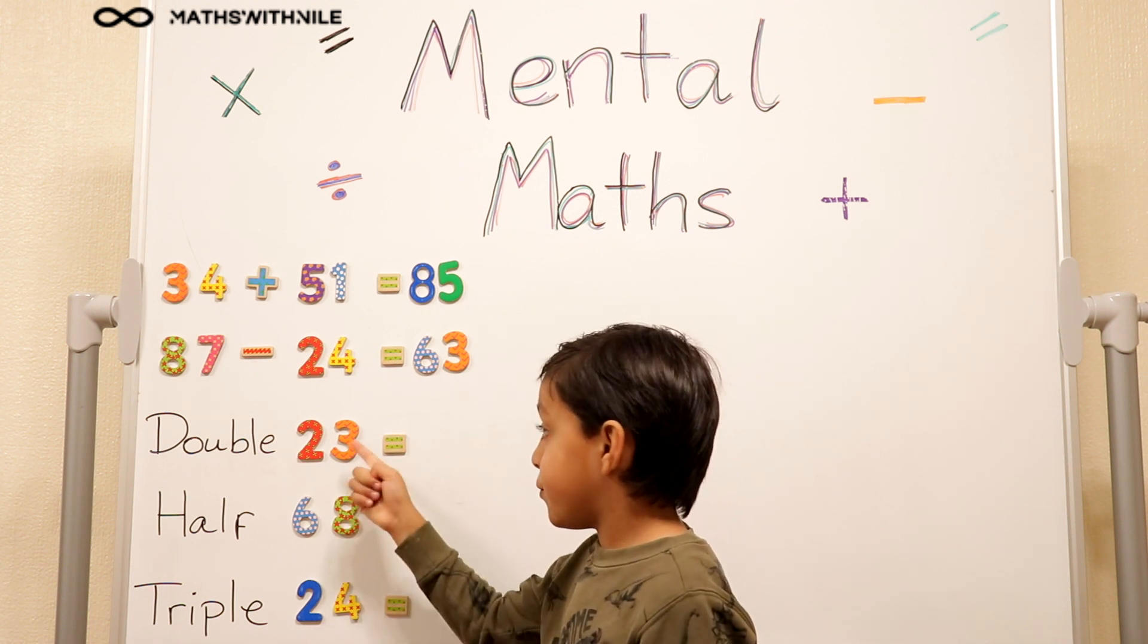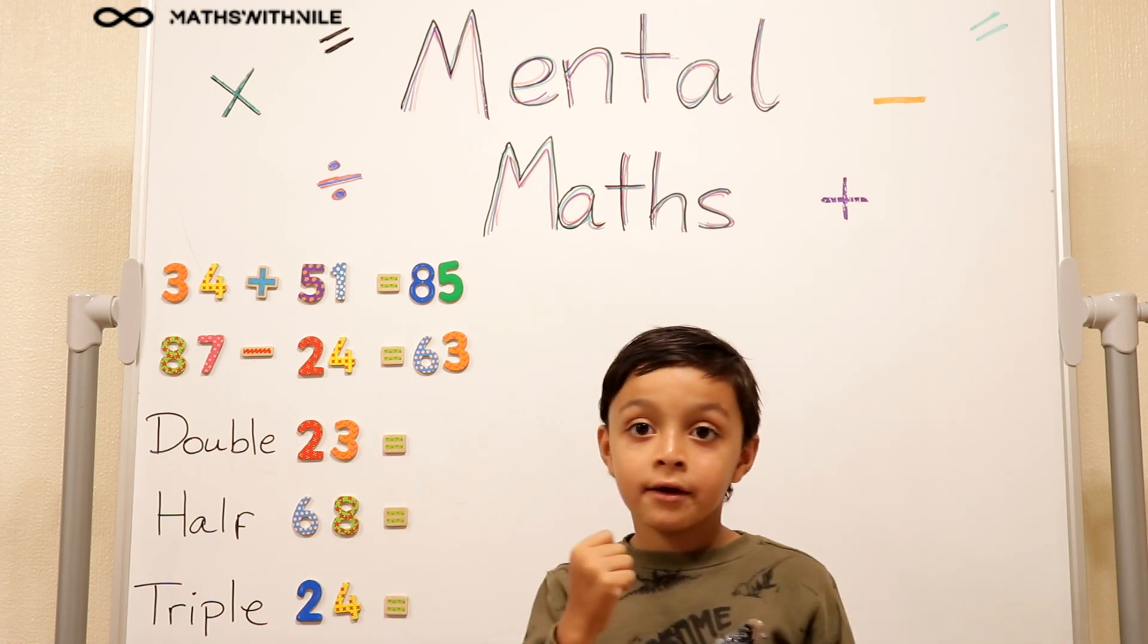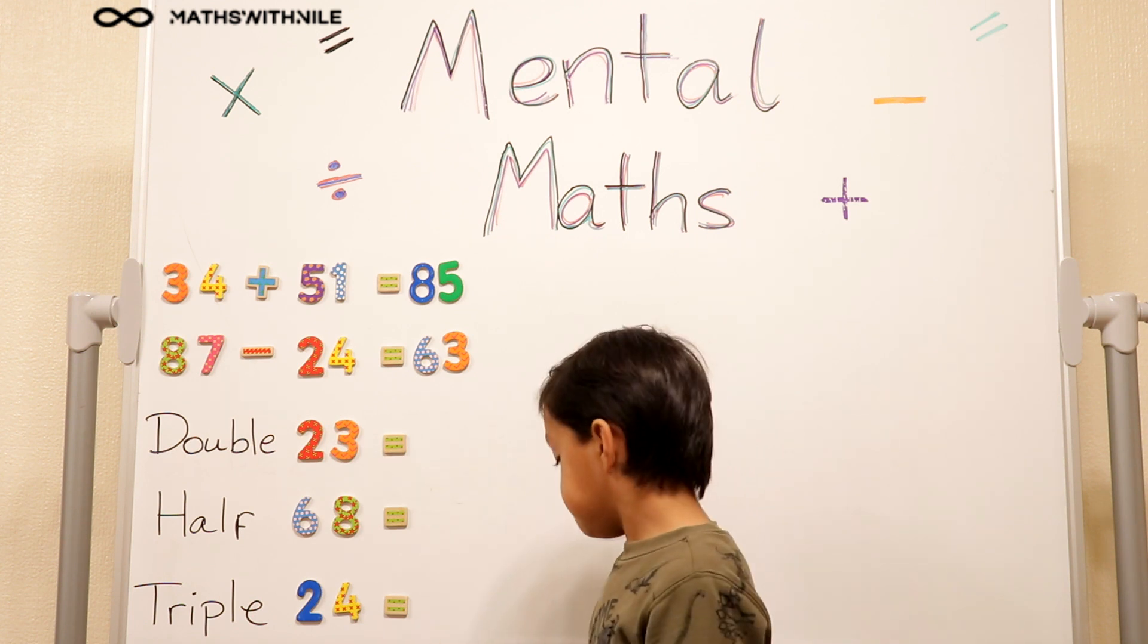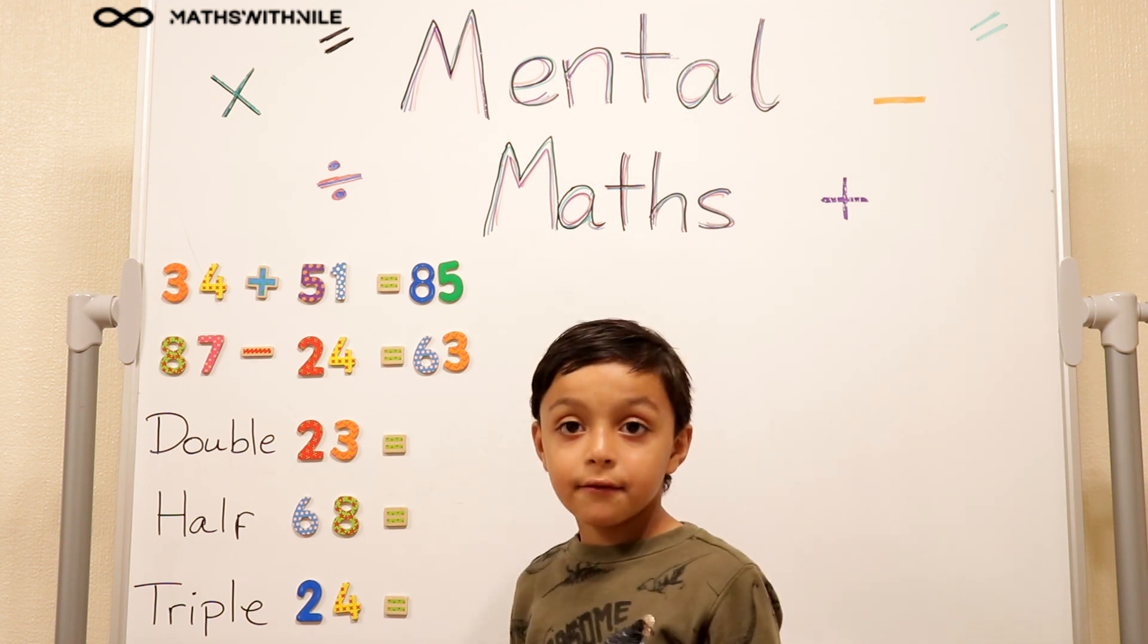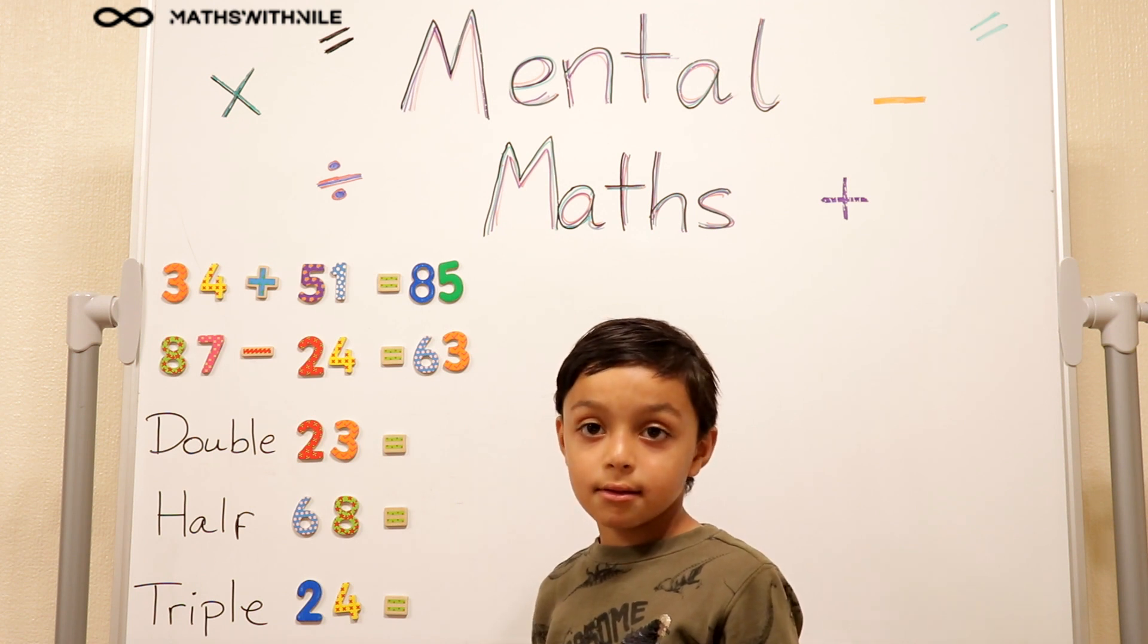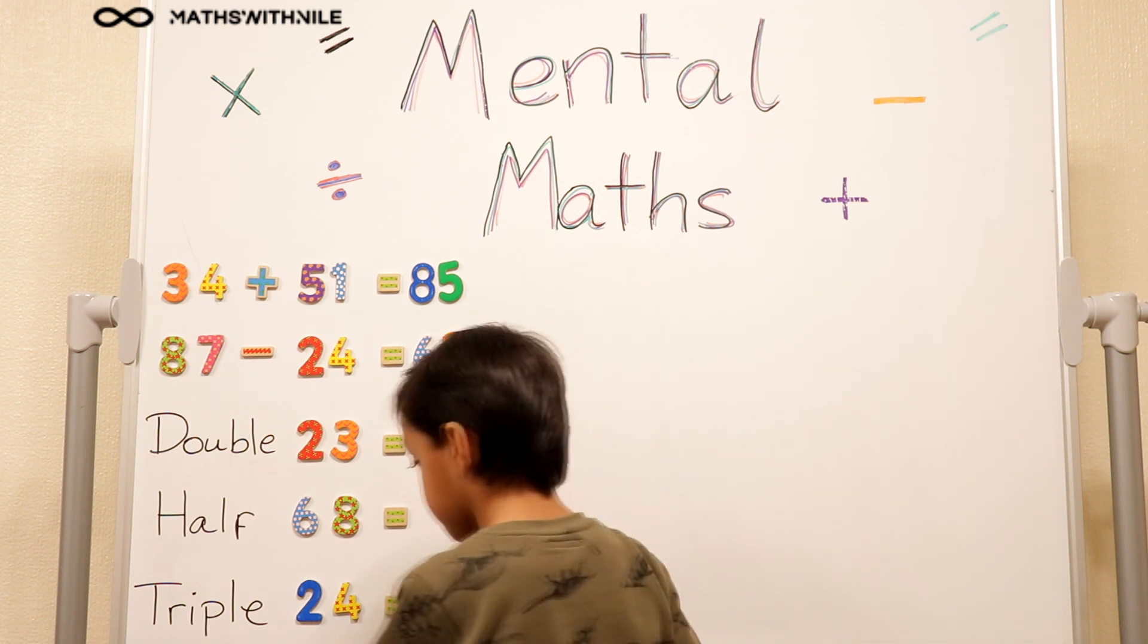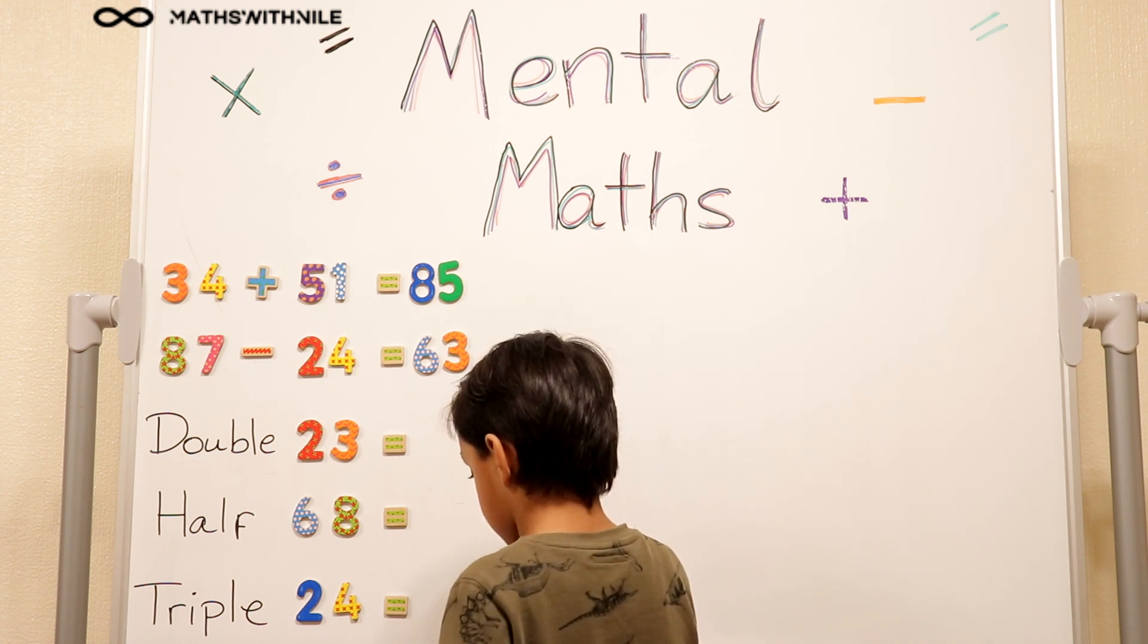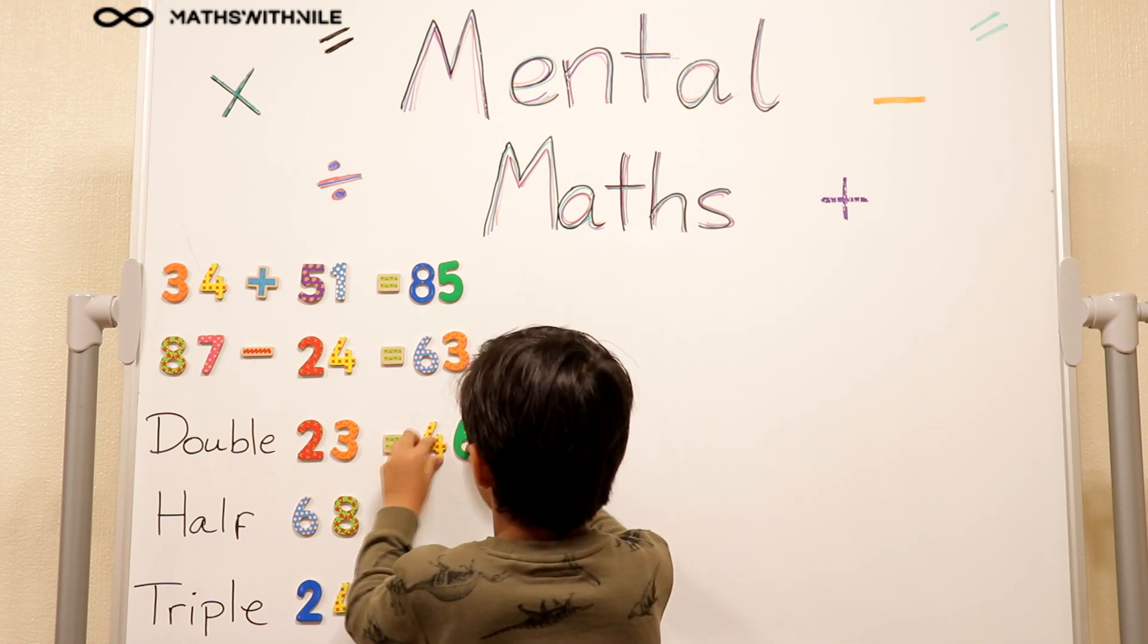And then double 3, 3, 4, 5, 6. Okay, so double 23 is 46. Very good. Double 20 is 40 and double 3 is 6. So the answer is 46.